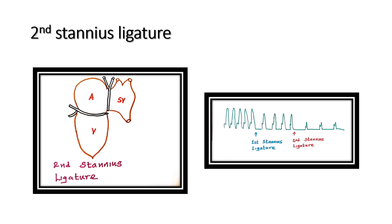The second Stannius ligature separates the atrium from the ventricle by another ligature. First Stannius ligature made between the sinus venosus and the atrium, second Stannius ligature separates the atrium from the ventricle. After the second Stannius ligature, the force of contraction is very much reduced in the cardiogram and the time interval also increased so much. This is the effect of second Stannius ligature.